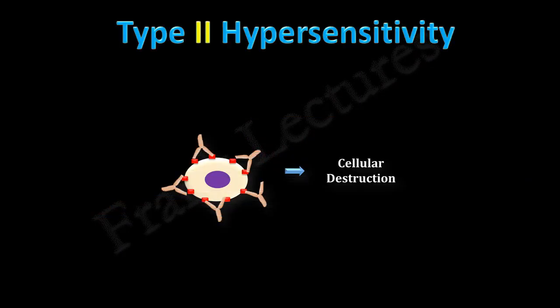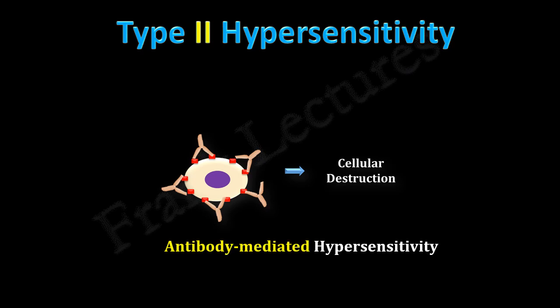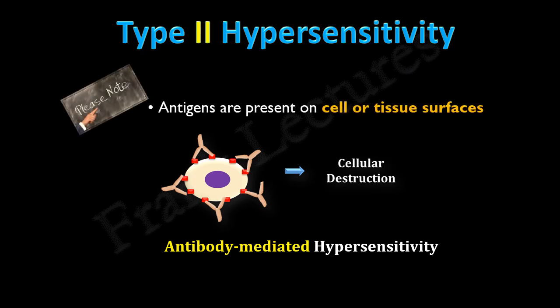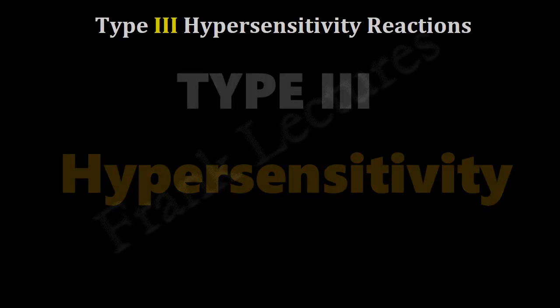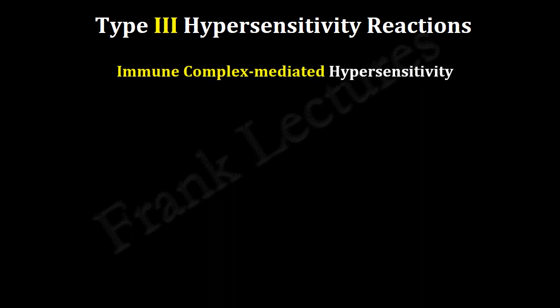In the previous video lecture, we covered type 2 hypersensitivity reactions. Recall that type 2 hypersensitivity reactions are also known as antibody-mediated hypersensitivity. The antigens triggering these reactions are present on cell and tissue surfaces. Today, we are going to study type 3 hypersensitivity reactions. Type 3 hypersensitivity reactions are also known as immune complex-mediated hypersensitivity.